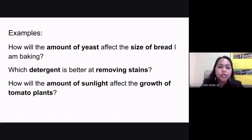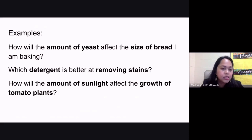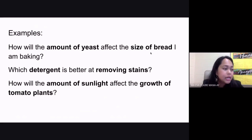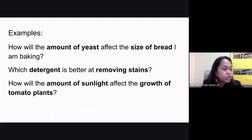Some examples of scientific questions can be found on your screen. Example number one: how will the amount of yeast affect the size of bread I am baking? This type of question requires experimentation and shows the relationship between variables — the amount of yeast, which is your independent variable, and the size of the bread, which is your dependent variable.